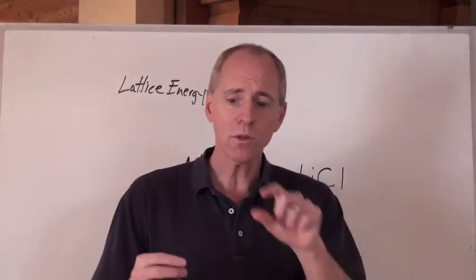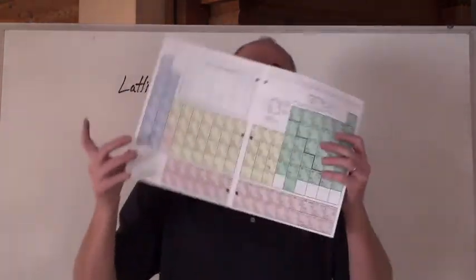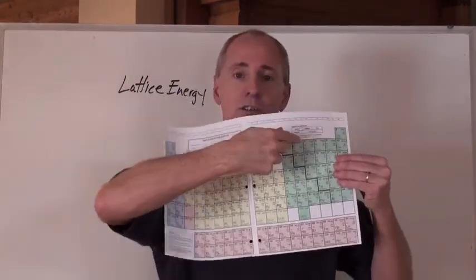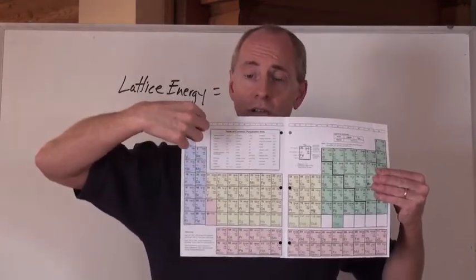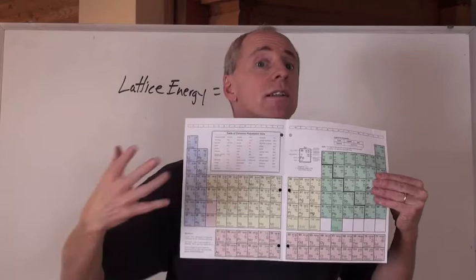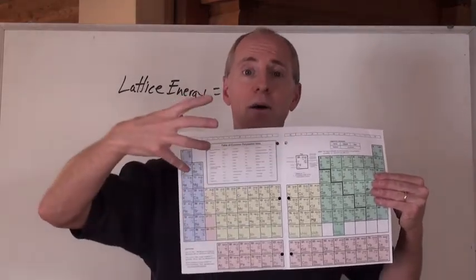By the way, when you go across the periodic table, you go across the periodic table this way, like I just said, the size of ions is going to increase going down, just like the size of atoms do, but going across, think about it.